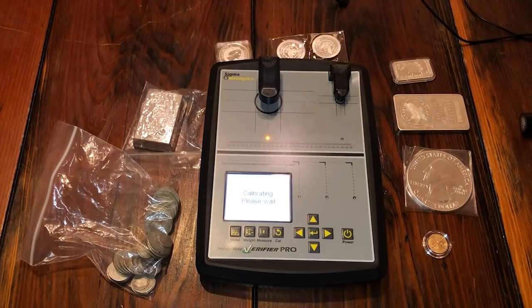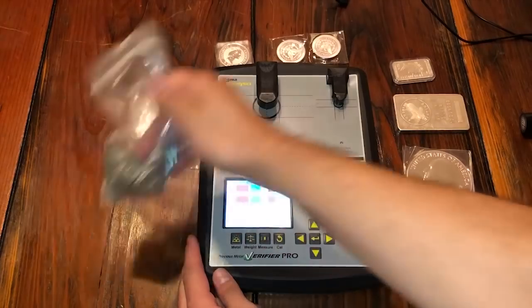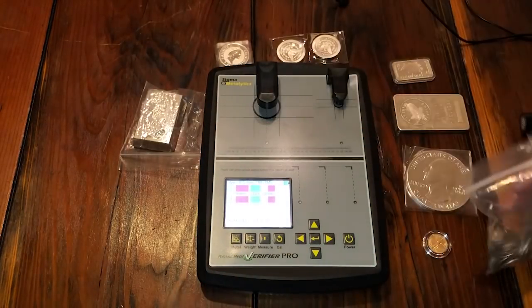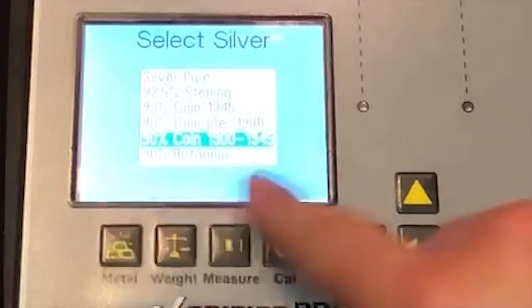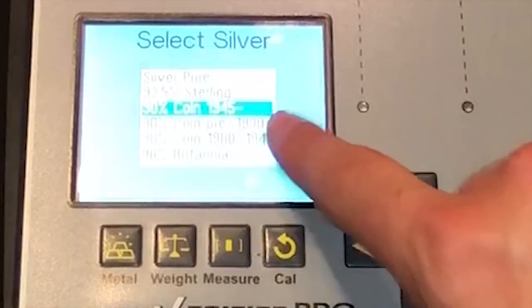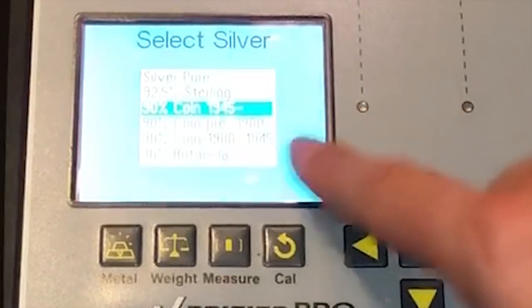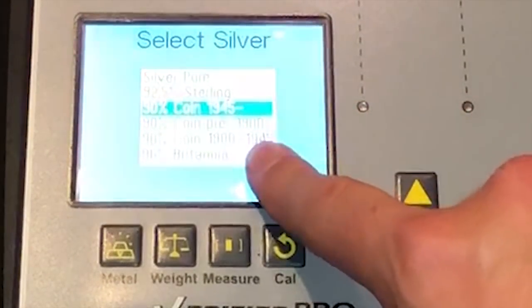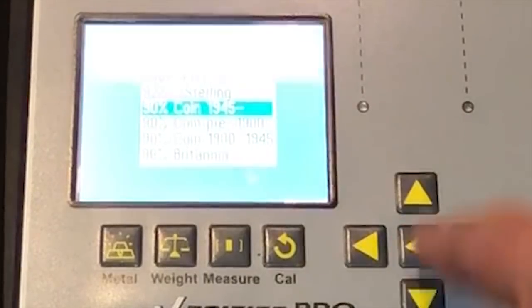Calibrating only takes about 10 seconds and I'm going to run you through quickly on how we can test some stuff. First I wanted to test some constitutional silver. You click here on metals and you go to silver coin 90% 1945 on. That's why I check these so I don't have to switch years. If it's pre-1945 you got to switch to 1900 and 1945.